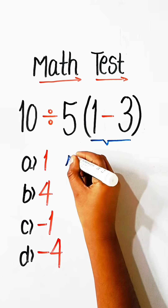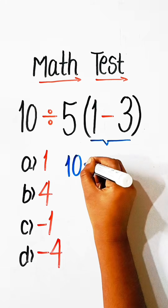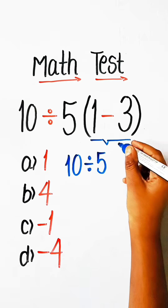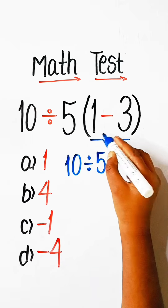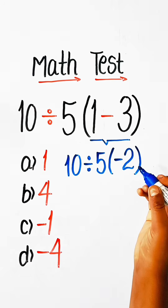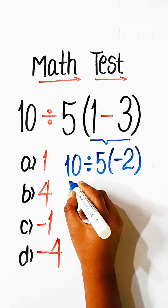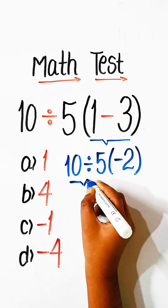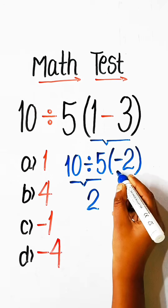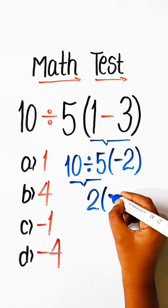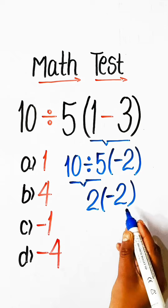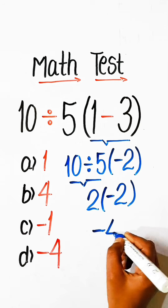We will write here 10 divided by 5. Inside the bracket, 1 minus 3 is minus 2. We will divide first: 10 divided by 5 is 2, multiplied by minus 2. 2 multiplied by minus 2 is minus 4.